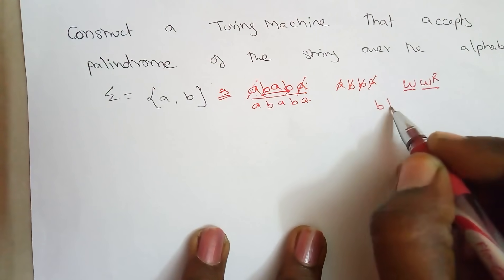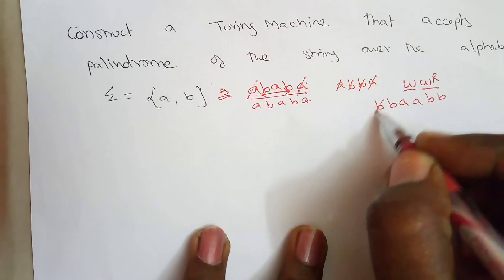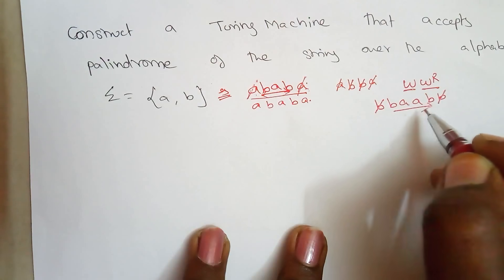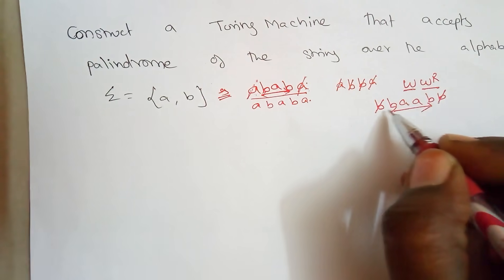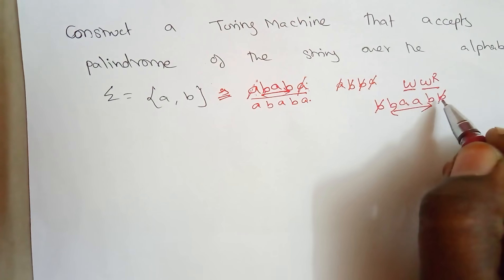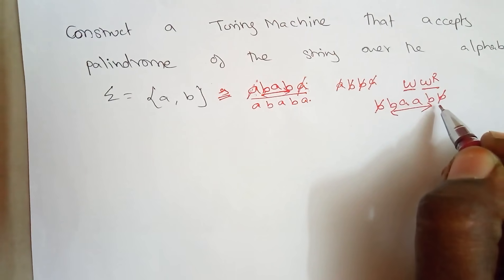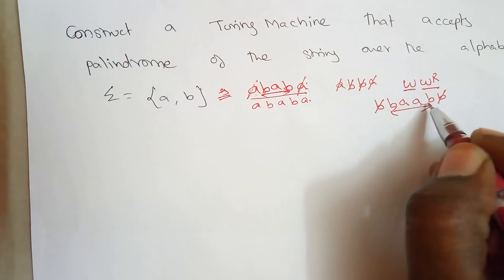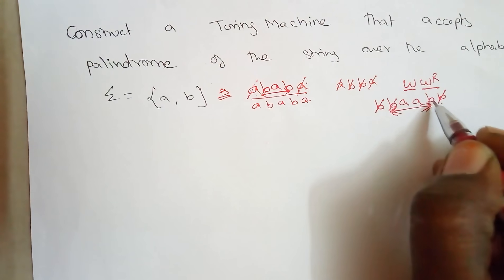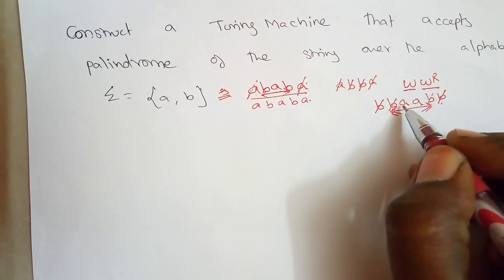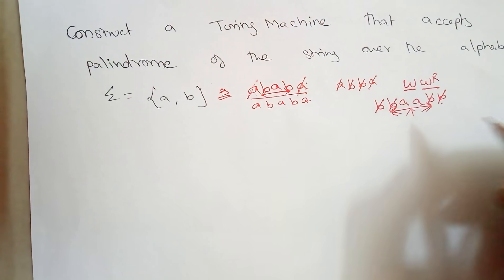For example, the string B, B, A, B, B — its reverse is also B, B, A, B, B, confirming it is a palindrome. The first and second elements match their corresponding last elements. We use a recursive procedure where at each step we check the first element, go to the last element, verify they are same, cancel them, and repeat for the remaining string.